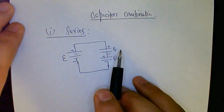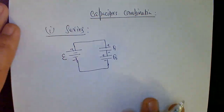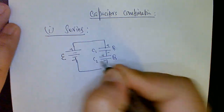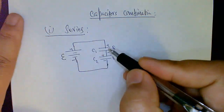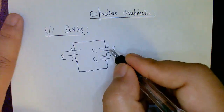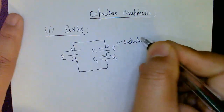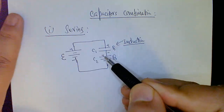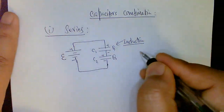Similar to resistor combinations, capacitors can also be combined in series and parallel. For the series combination, if you have two capacitors with capacitances C1 and C2 connected in series and connect to a battery, a key point is that both capacitors store equal charge Q due to electrical induction. If charge Q develops on one plate, it induces equal and opposite charges on the adjacent plates.